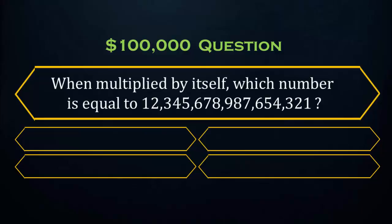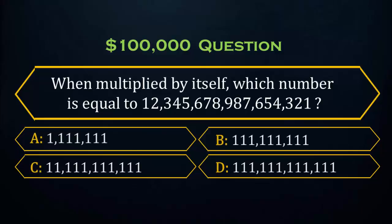This question was asked in the reality show Who Wants to Be a Millionaire and it was a $100,000 question. The problem is on your screen: when multiplied by itself, which number is equal to 12,345,678,987,654,321? And these are your options. Feel free to pause the video and think logically.